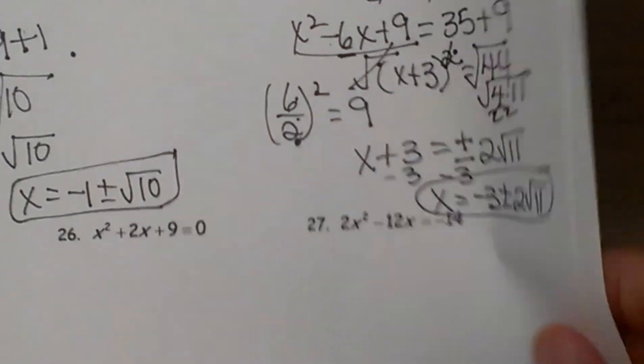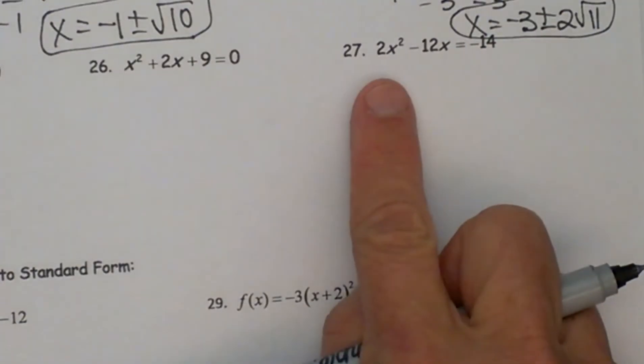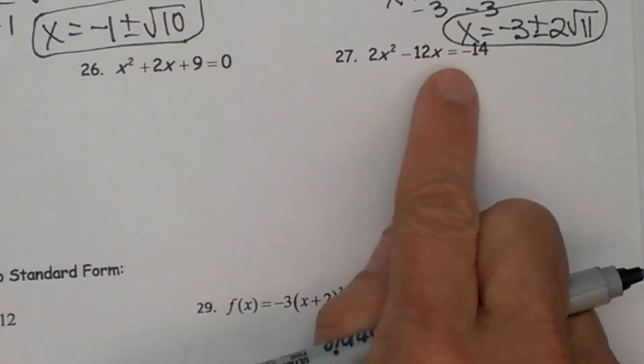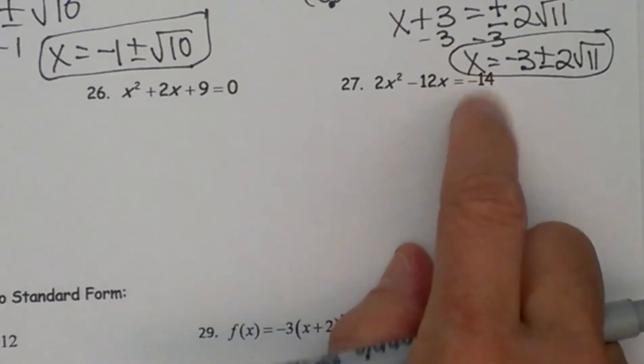So let's go down and do one more that has a lead coefficient this time. This time this one is 2x² minus 12x is equal to, and you can't quite see that is negative 14.